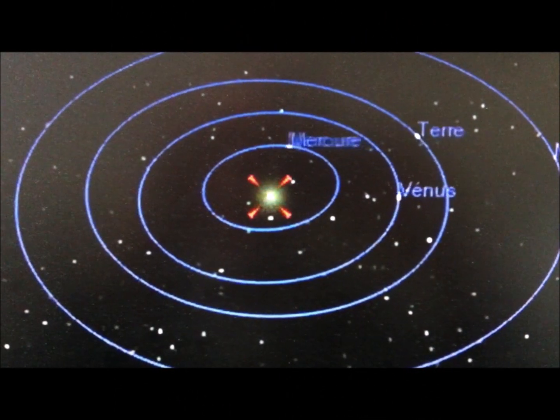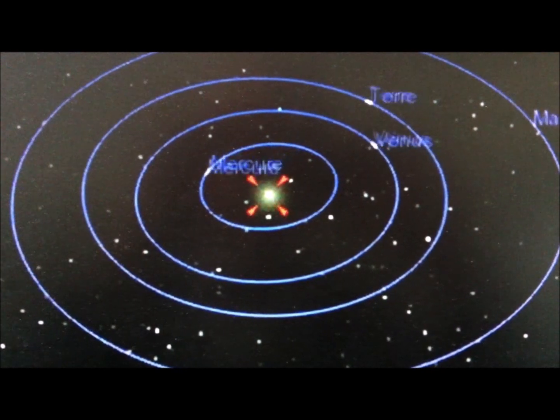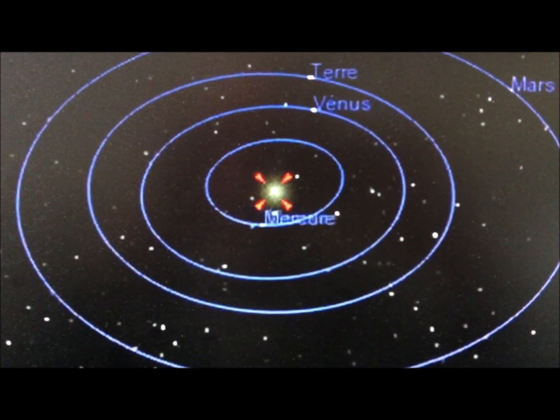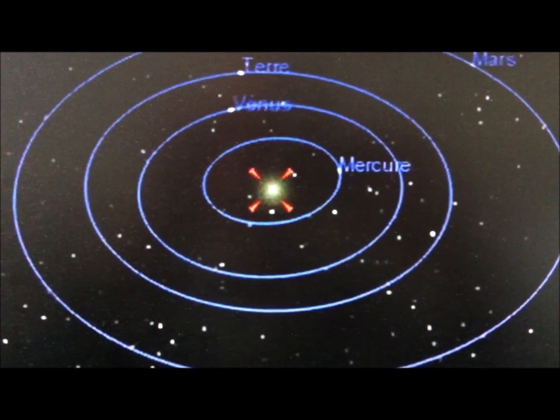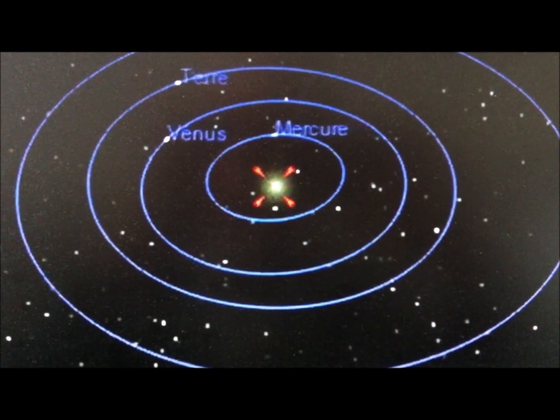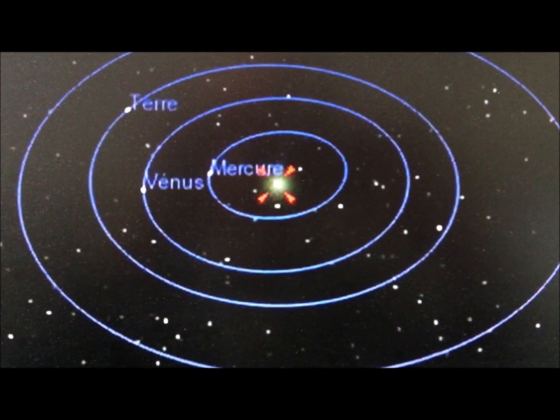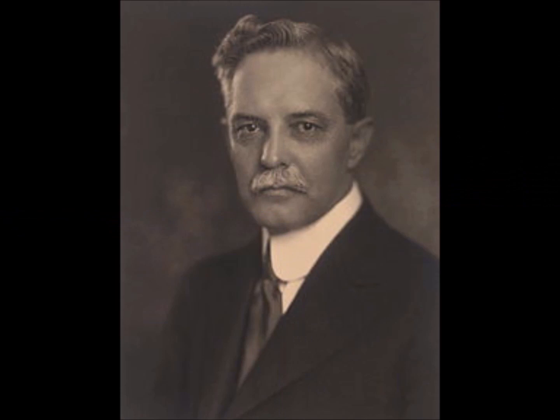When it revolves around the sun at 30 kilometers per second. At the time the galaxy was not yet discovered. Later, Morley performed additional measurements with Miller. They found speeds of up to 9 kilometers per second.